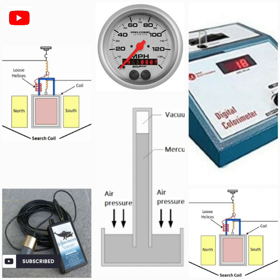The lactometer measures the relative density of milk to determine its purity. The manometer measures the pressure of gases. The micrometer measures distances or angles. The microphone converts sound waves into electrical vibrations.